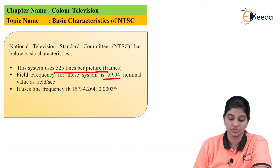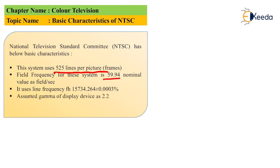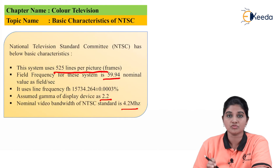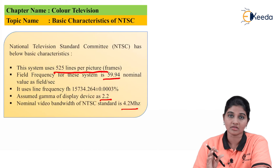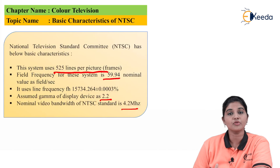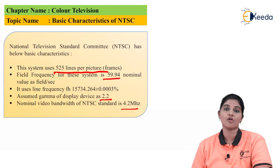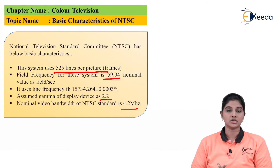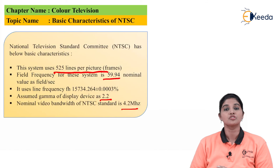The assumed gamma of the display device is 2.2, and the nominal video bandwidth of the NTSC system standard is 4.2 megahertz. These are the basic characteristics provided by the American standard, that is the NTSC system.